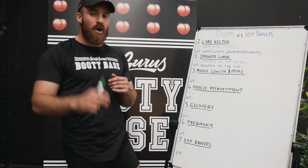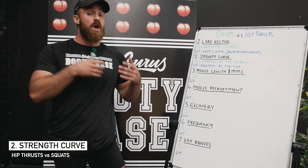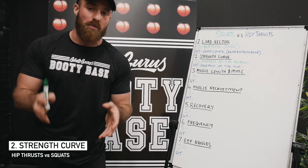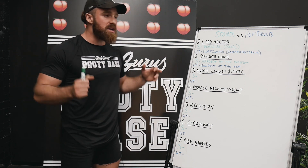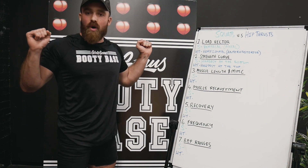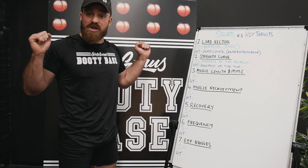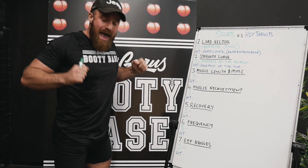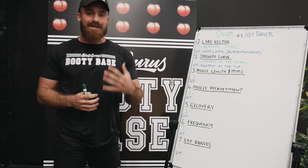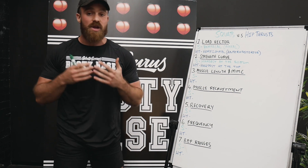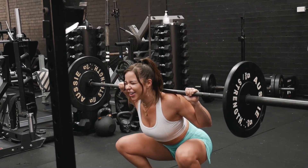The second topic is what we call the strength curve or the resistance profile of the lift. With a squat, you can stand up with a barbell on your back and sure, it might be feeling a little heavy but it's really not challenging all that much. It's not until you start to come back and down deep into the bottom of your rep that you're really starting to challenge the muscles. So with a squat, it's easiest at the top and hardest at the bottom.